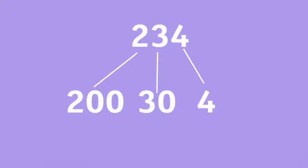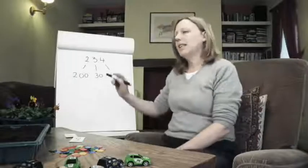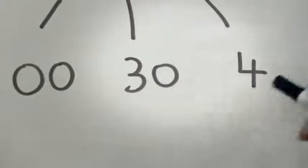Then, if we want to add it to another number, let's say 53, we do it in these bits rather than trying to do it in one go. Here's how this might look on a number line.